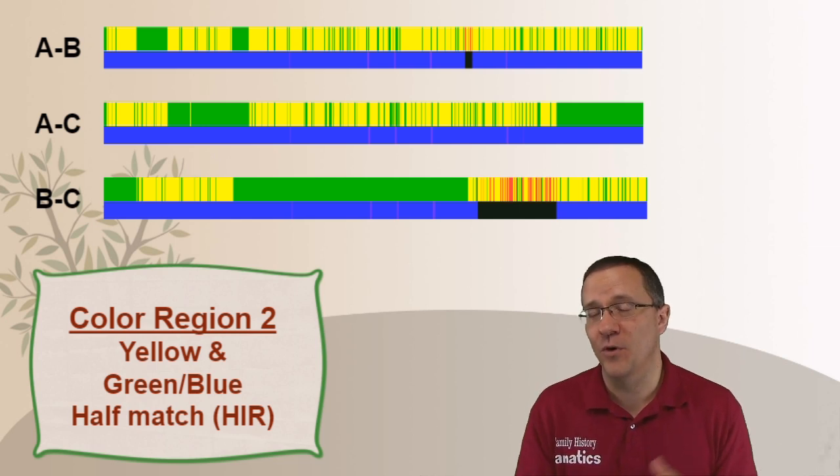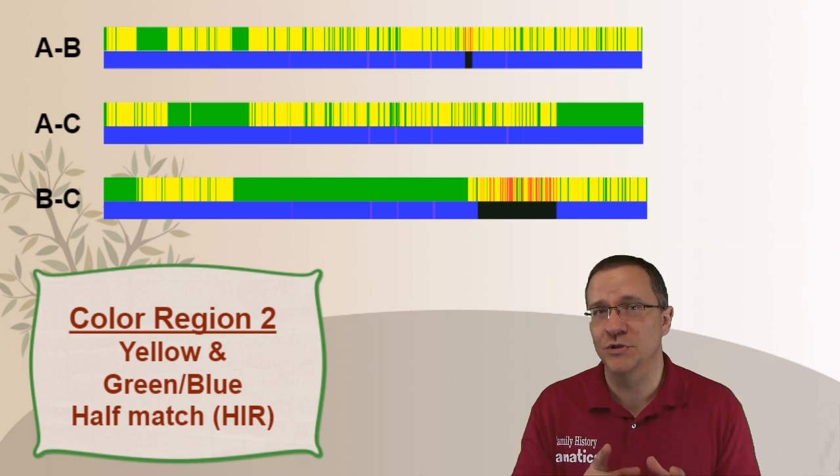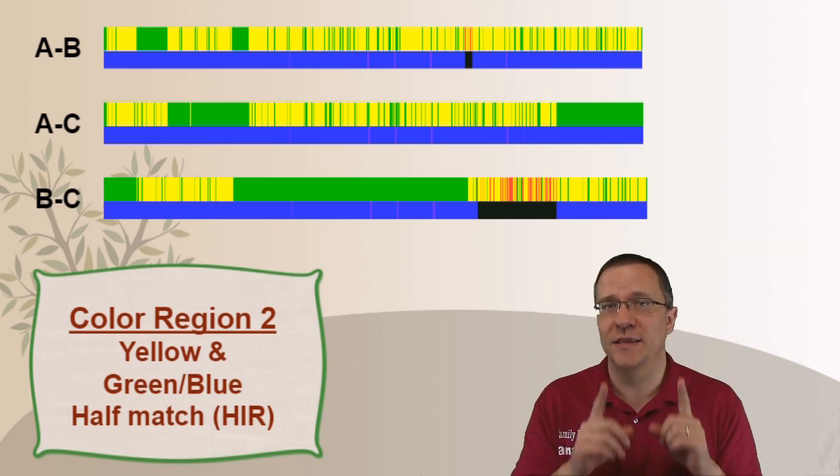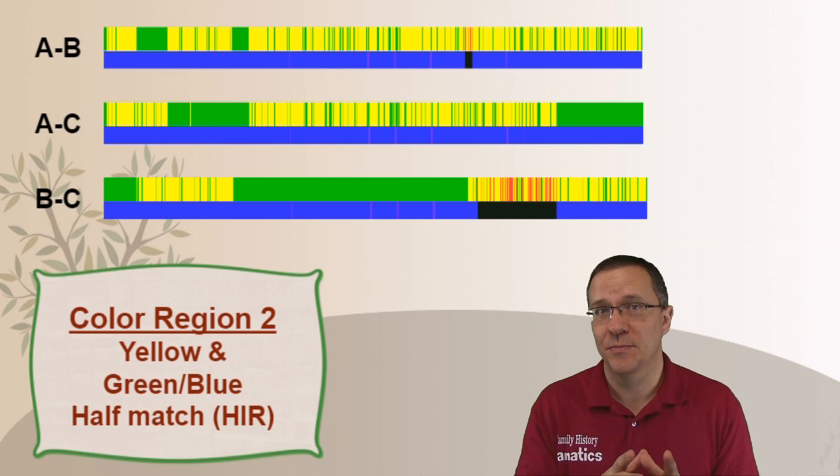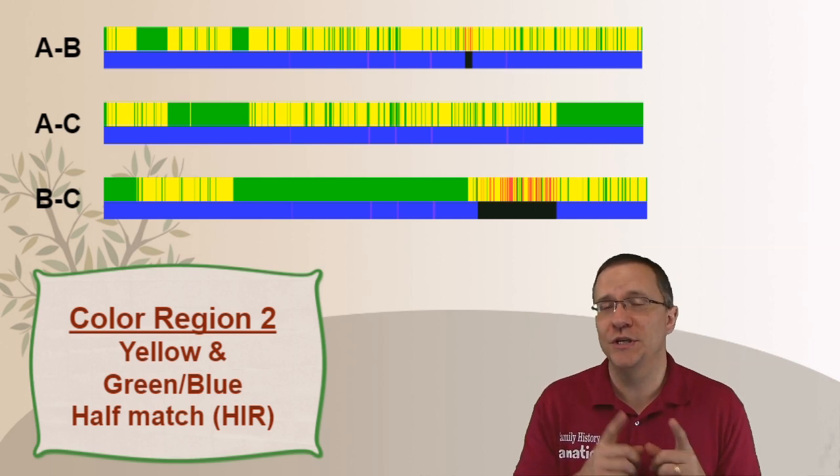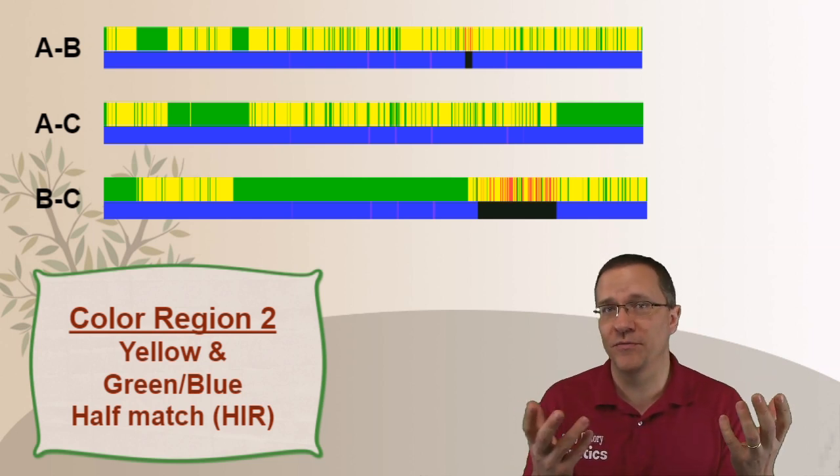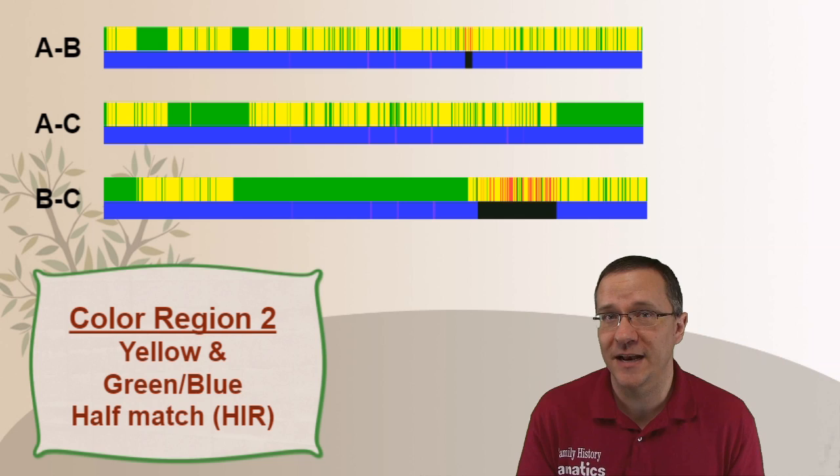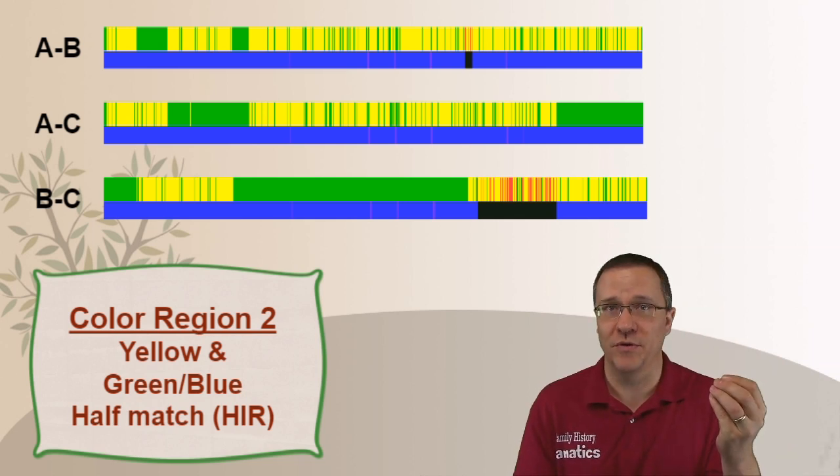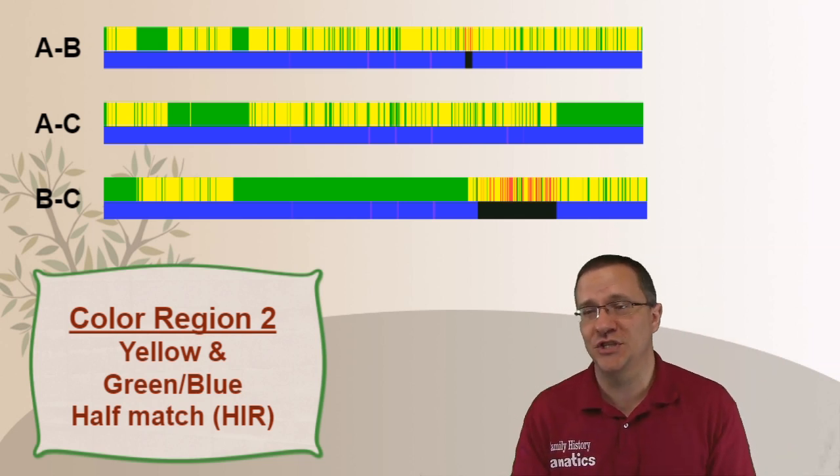Now the difference between a full match and a half match is with a full match on both chromosomes you share the exact same SNPs. With a half match you only share a SNP on one of those two chromosomes. So chromosome 10, you have one from your mother and one from your father. If you had a full match in that area then you share both of them. If you have a half match in that area then you just share one.